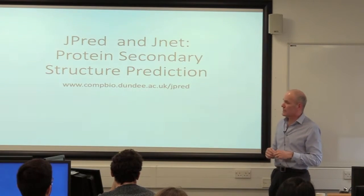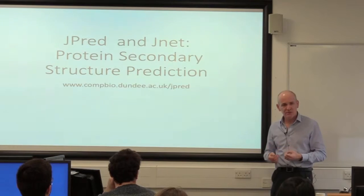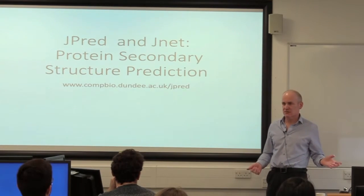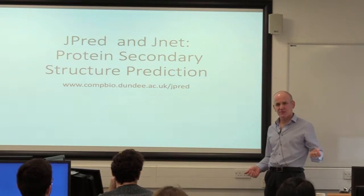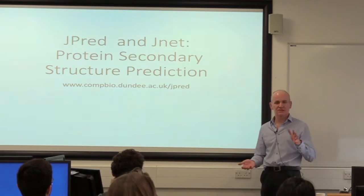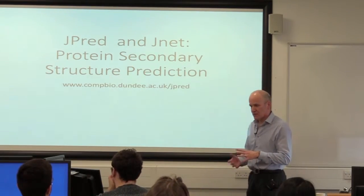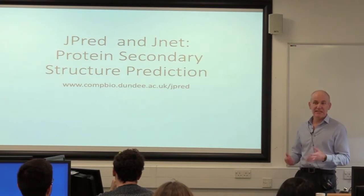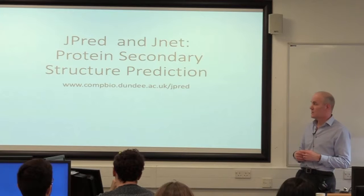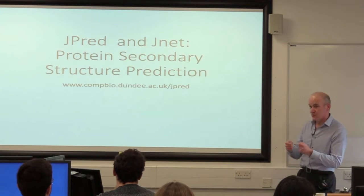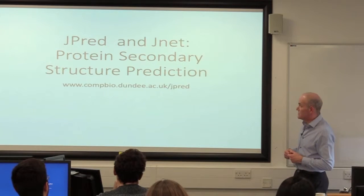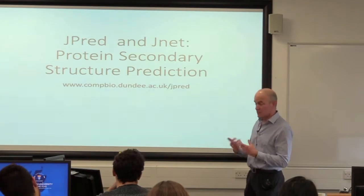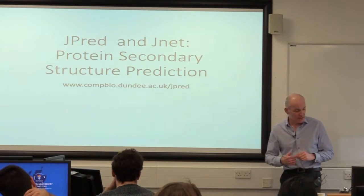J-Pred has this other advantage — it's quite a useful way to get a first-pass multiple alignment for your favourite protein as well, because part of what it does is it searches a database and pulls back a bunch of sequences that are similar. So it can be quite a good starting point for looking at your protein family. We'll go through the different ways of using the output from J-Pred in Jalview, depending on what you're interested in looking at.